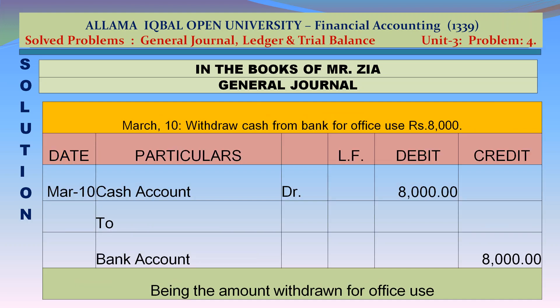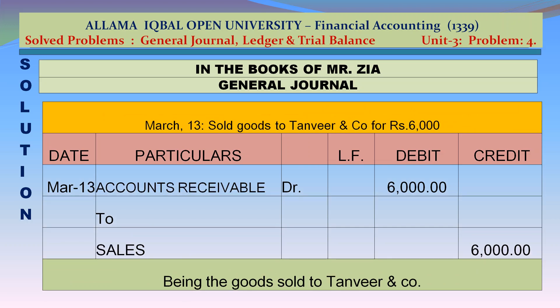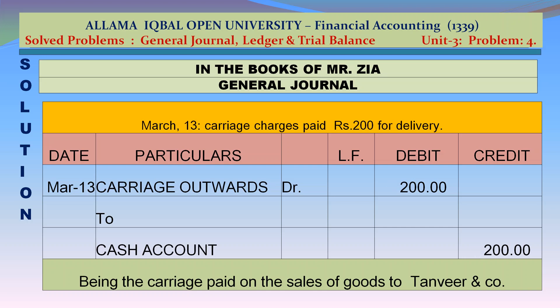March 10: Cash account debit Rs 8,000 to bank account credit Rs 8,000 — being the amount withdrawn for office use. March 13: Accounts receivable debit Rs 6,000 to sales credit Rs 6,000 — being the goods sold to Tanvir & Company. Carriage outwards account debit Rs 200 to cash account credit Rs 200 — being the carriage paid on sales to Tanvir & Company.